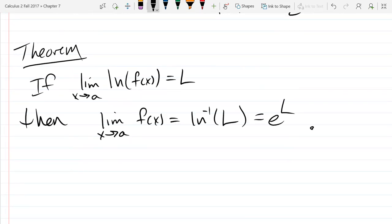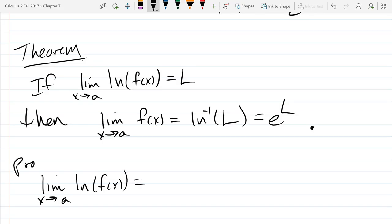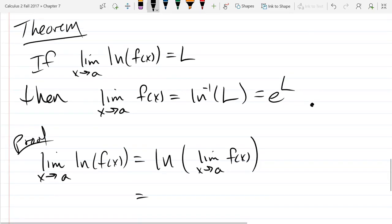All right, why do I say this is a no-dough theorem? Yeah, it's a continuous function. So natural log is a continuous function. Here's the proof. If I could push the limit through the natural log function, and we started out assuming on the left side that this was L, capital L.